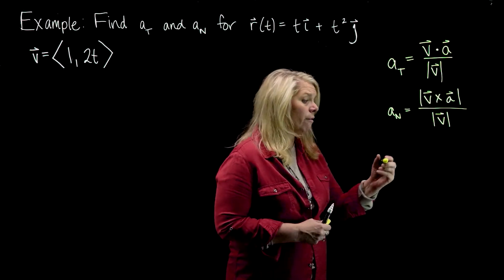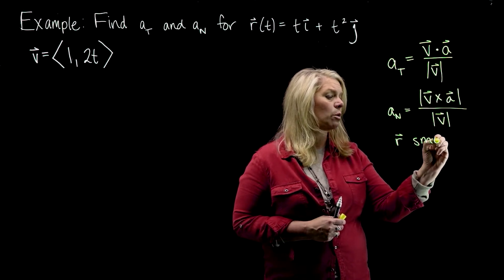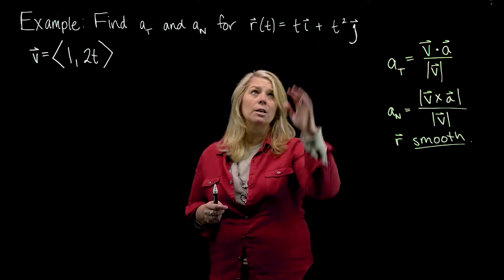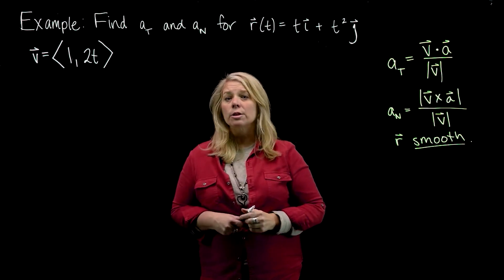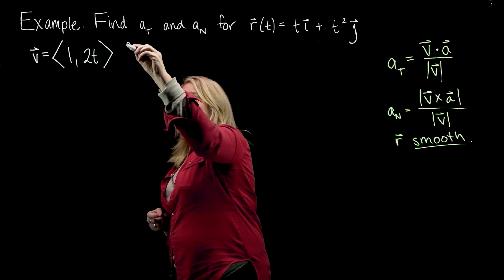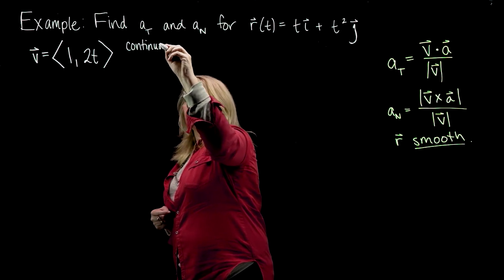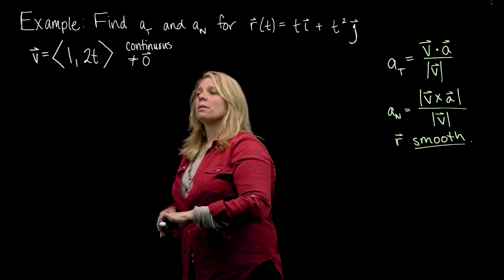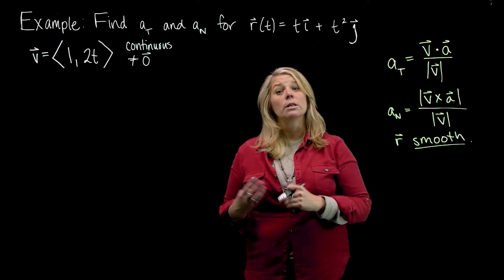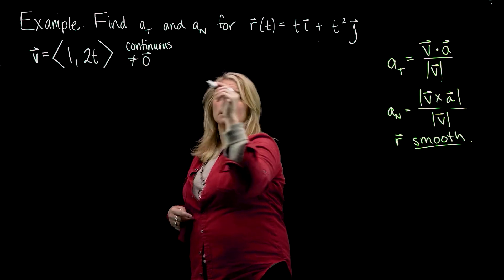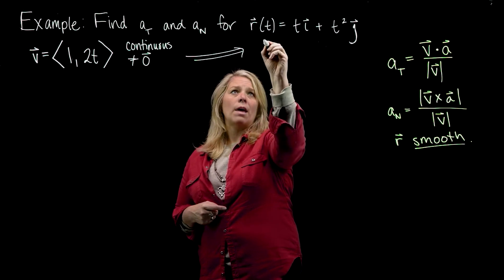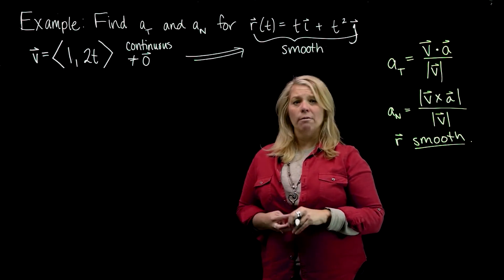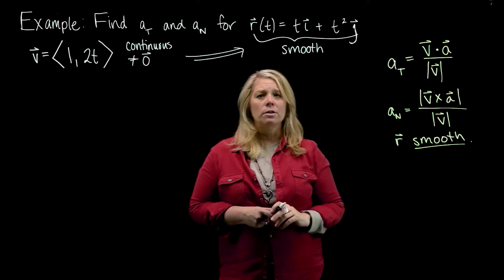These formulas work provided r(t) is a smooth parameterization of your curve. We can check and verify that we do have a smooth parameterization. The conditions for smoothness are that your velocity vector is continuous and never the zero vector. This velocity vector is continuous for all values of t and never the zero vector — that first component is always 1, which is never zero. So that implies that r(t) is a smooth parameterization of our curve. You don't necessarily have to write that out, but it is something you should verify before you start using these formulas.